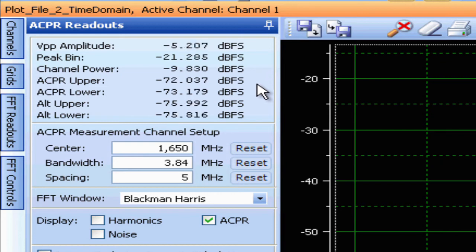In the adjacent upper and lower channels, it's measuring about minus 72 dB full scale. And in the alternate upper and alternate lower channels, we're measuring about minus 75 dB full scale.